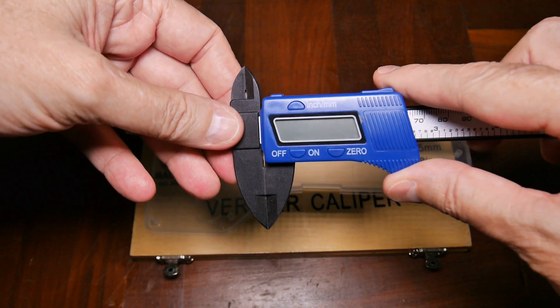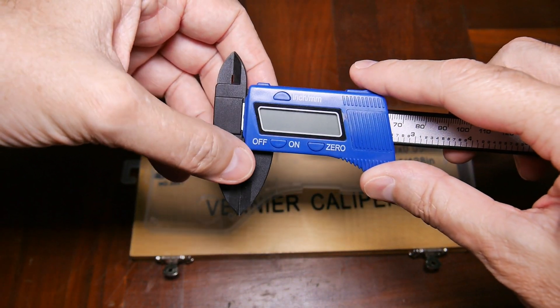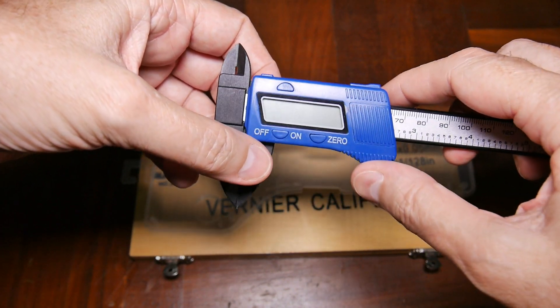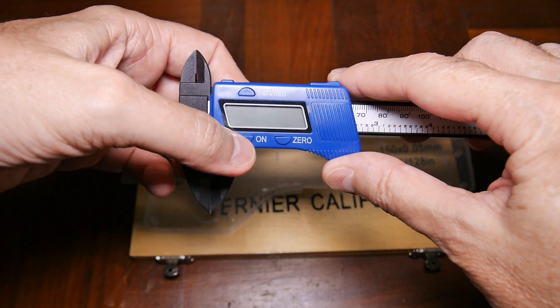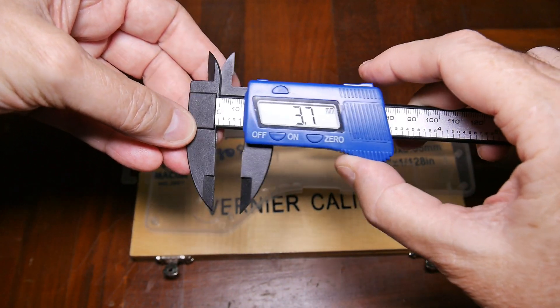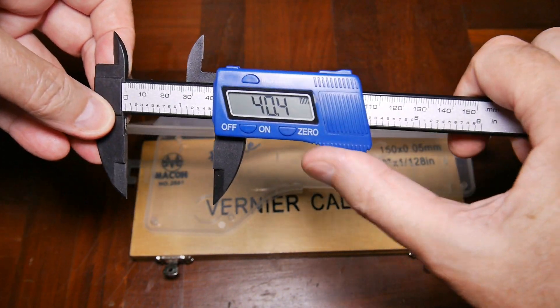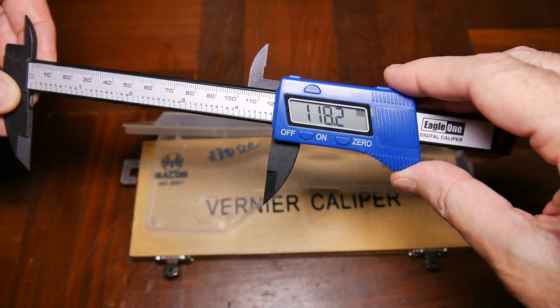This will do inches and millimeters. It's got an on-off switch and zero, and that's about it. You just punch it on and zero it out. Right now it's zeroed out and you just move it back and forth. I've been playing with it.